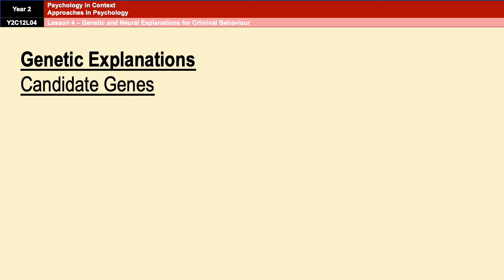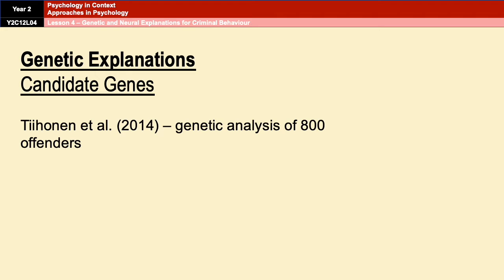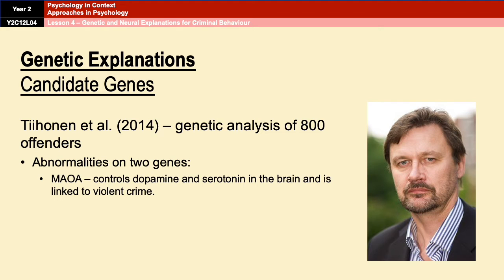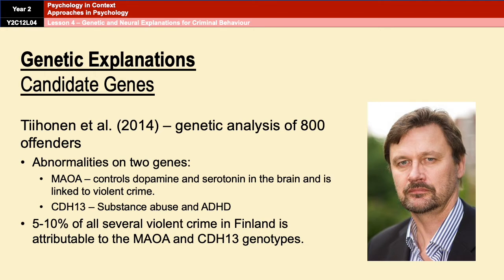A genetic analysis of almost 800 offenders in Finland conducted by Tihonen et al. in 2014 suggests that two specific candidate genes may be associated with violent crime: the MAOA gene, which regulates serotonin and dopamine in the brain — serotonin particularly is thought to play a role in impulsive aggression — and the CDH13 gene, which has been linked to substance abuse and ADHD. The analysis found that 5–10% of all violent crime in Finland is attributable to the MAOA and CDH13 genotypes.